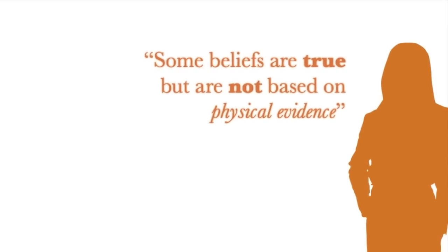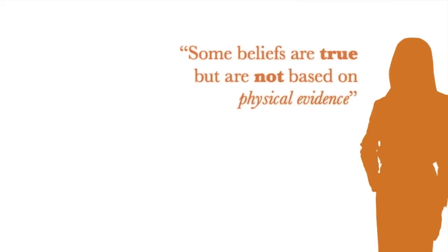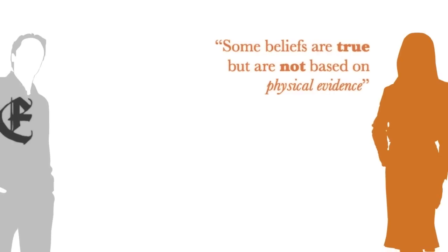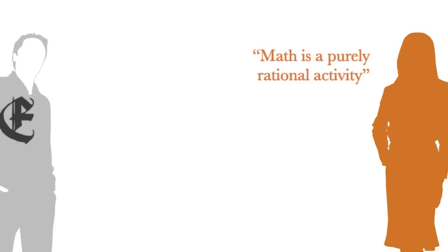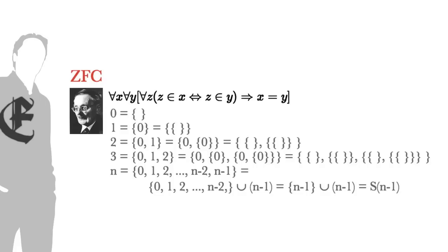One of the criticisms leveled at the thesis of evidentialism by many atheists was that some beliefs are true but not based on physical evidence. One of the most common examples was mathematics. Math, they claim, is a purely rational activity. It has no basis in evidence. Mathematics is based on proofs, and proofs are purely rational. Let's examine this claim.